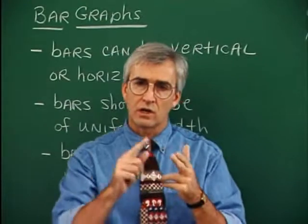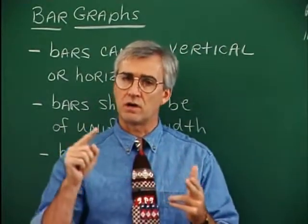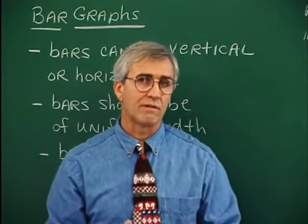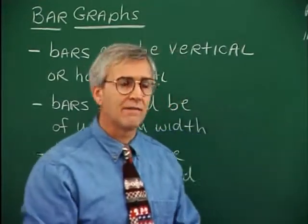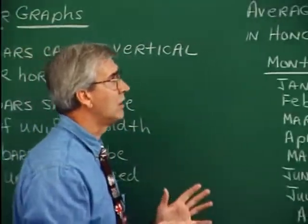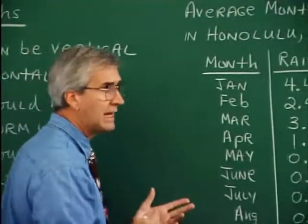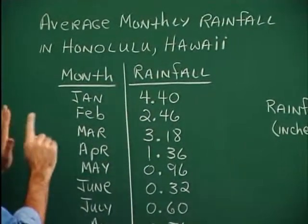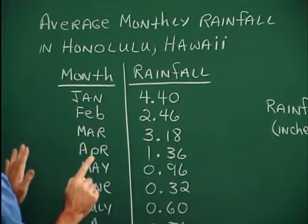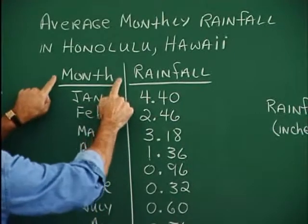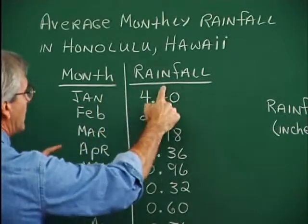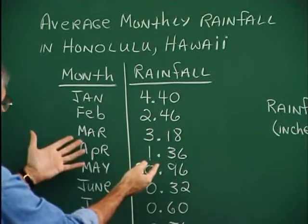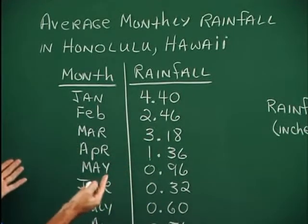It's a comparison of the lengths of the bars that makes the bar graph so effective. Let's build a bar graph concerning rainfall amounts in inches in Honolulu, Hawaii. These are average rainfall amounts in Honolulu. I have a month here and rainfall amount in inches here, and let's build the bar graph for this information.